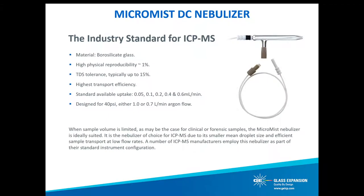Now let's talk about the Micromyst nebulizer. The Micromyst is our most popular nebulizer for ICP-MS applications and the standard nebulizer configuration for many ICP-MS manufacturers, due to its excellent transport efficiency and precision at low flow rates. For example, the 50 microliter per minute Micromyst has a 50% efficiency, therefore injecting 25 microliters per minute into the plasma. On the other hand, a standard high-flow 2 mils per minute nebulizer has approximately 2% transport efficiency, resulting in about 40 microliters per minute of sample injected into the plasma.